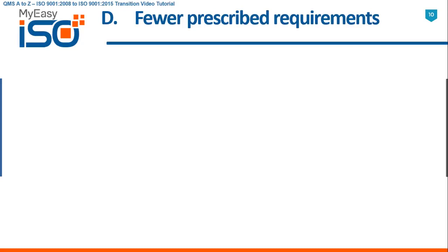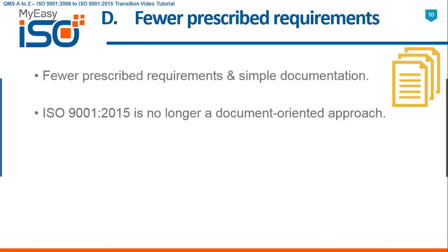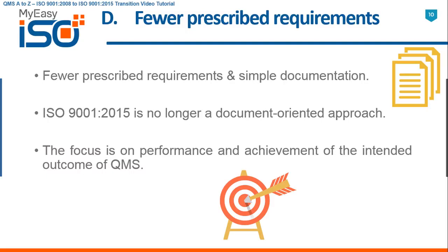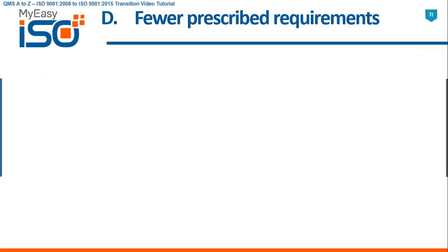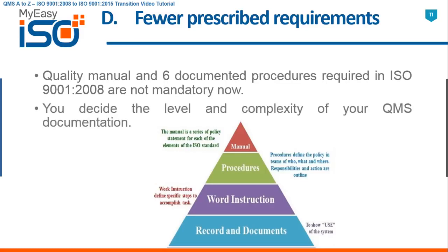D — Fewer Prescribed Requirements and Simple Documentation. ISO 9001 2015 is no longer a document-oriented approach. The focus is on performance and achievement of the intended outcome of QMS. Quality manual and six documented procedures required in ISO 9001 2008 are not mandatory now. You decide the level and complexity of your QMS documentation.